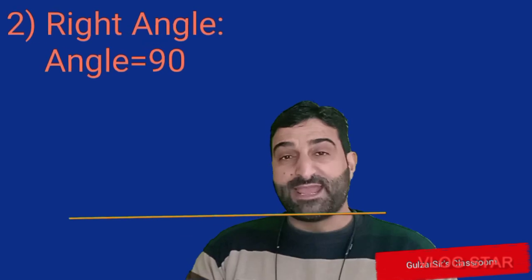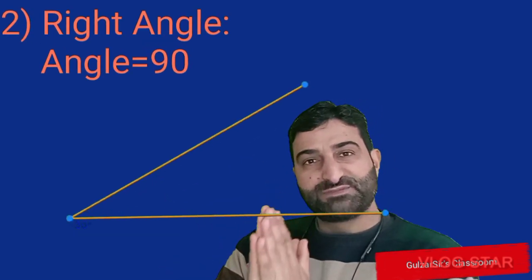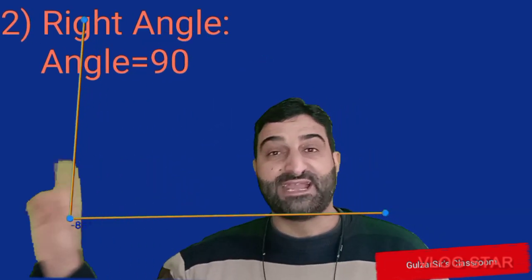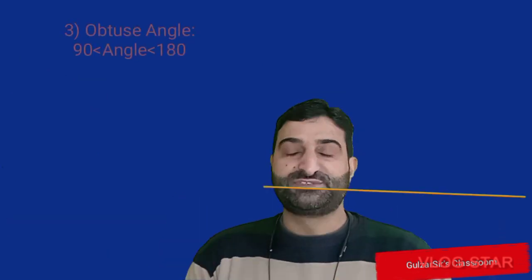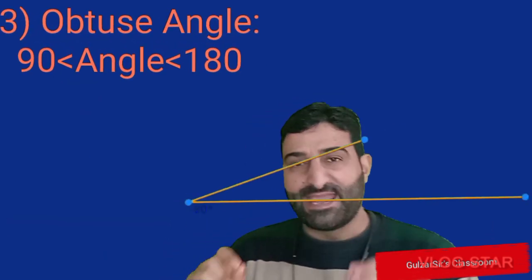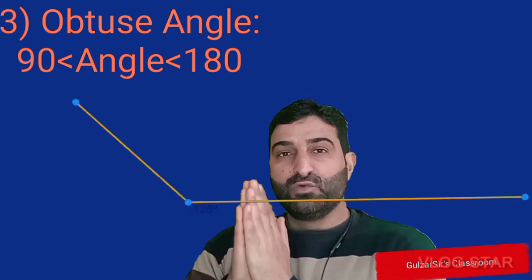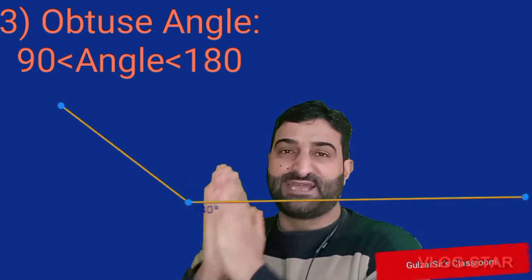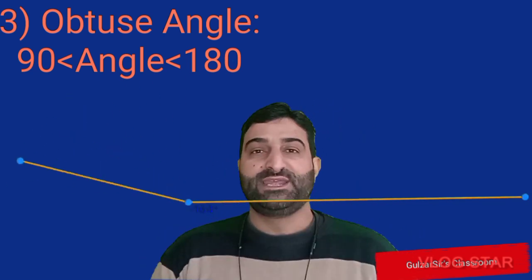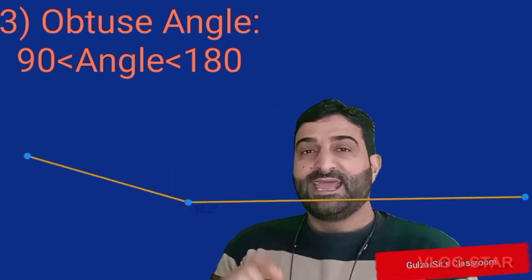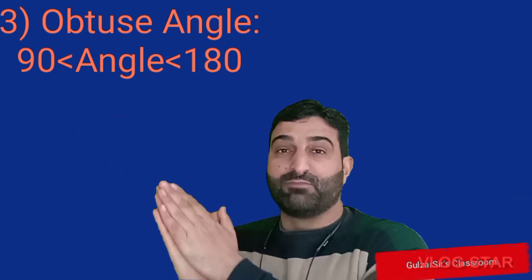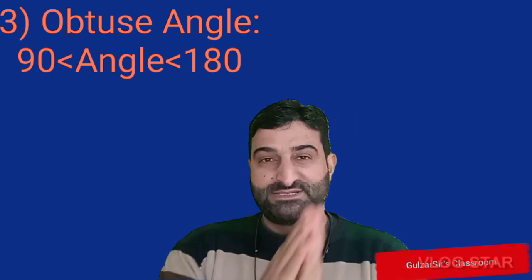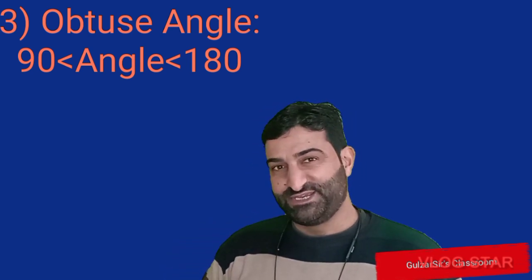Then we have the right angle. A right angle is that angle whose measure is equal to 90 degrees. An obtuse angle is that angle whose measure lies between 90 degrees and 180 degrees, or you can say an angle whose measure is more than 90 degrees but less than 180 degrees.